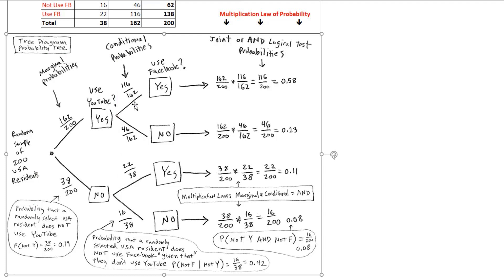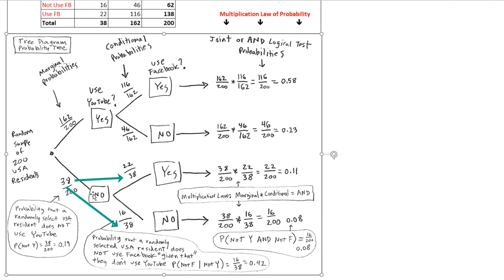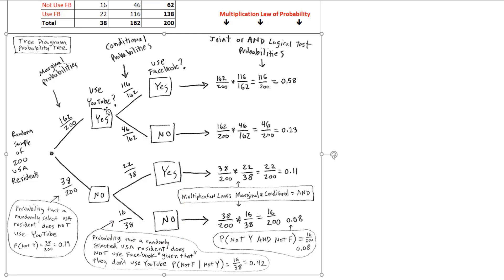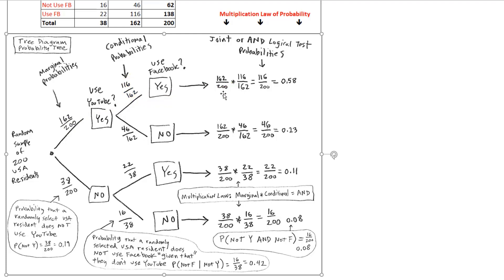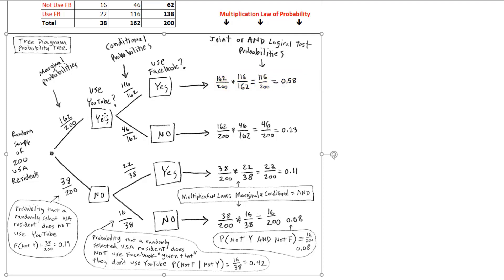At each node, we list yes and no for 'do you use Facebook.' The sample space has changed — we're now talking about those who use YouTube, so 162 becomes the denominator. Within that sample space, 116 said yes they use Facebook and 46 said no. For the 'no YouTube' branch, 38 is the denominator; 16 said no to Facebook and 22 said yes. The cool thing about a probability tree is that along any path, you multiply the marginal probability times the conditional probability to get the AND — that's the multiplication rule. The probability someone uses YouTube times the conditional probability they use Facebook given YouTube gives the AND for that path.